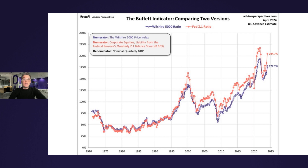And those early decades when the ratio was substantially lower definitely impacts the long-term trend. For a visual comparison, this chart here is an overlay of the two versions over the same timeframe. The one with the Fed numerator — the red series — has a tad more upside volatility, but they're pretty much singing in harmony. Regardless of the version, an evident feature is the upward trend over the decades.